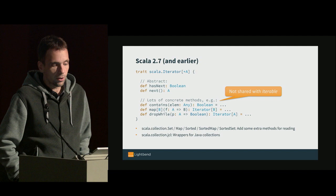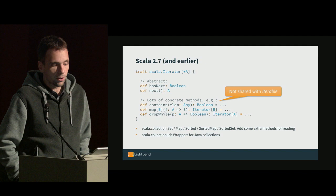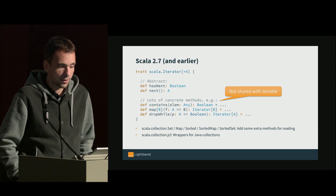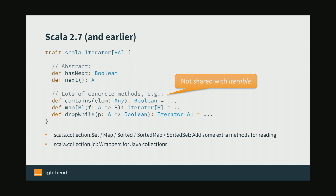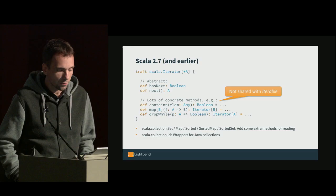In Scala 2.7 we also have a trait Iterator of A, which is completely unrelated to the other collection types — it doesn't extend anything, there's no common abstraction. It has the usual hasNext and next methods you need to implement, and it also defines a bunch of concrete methods which all return another iterator, with no shared implementation with Iterable.